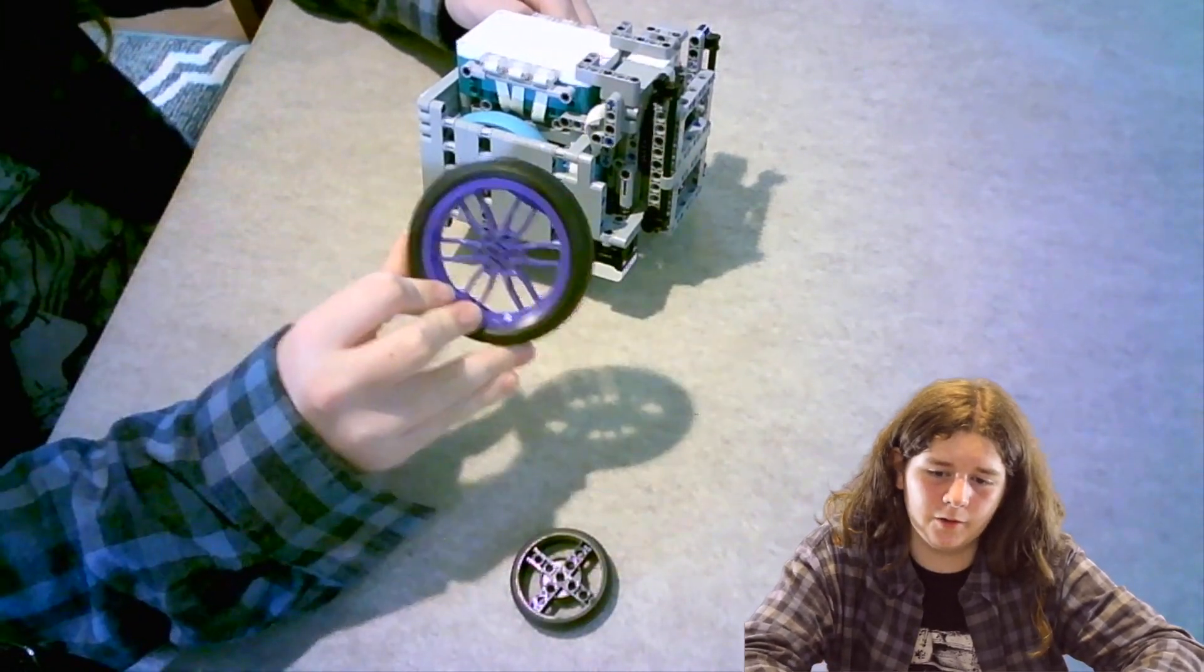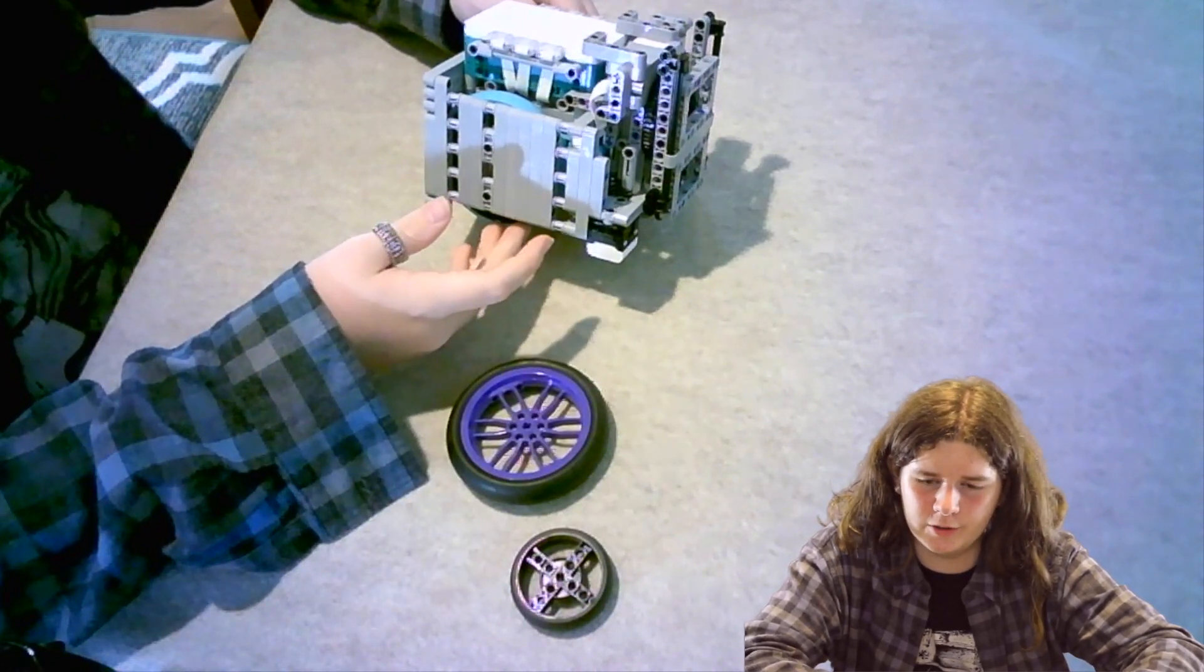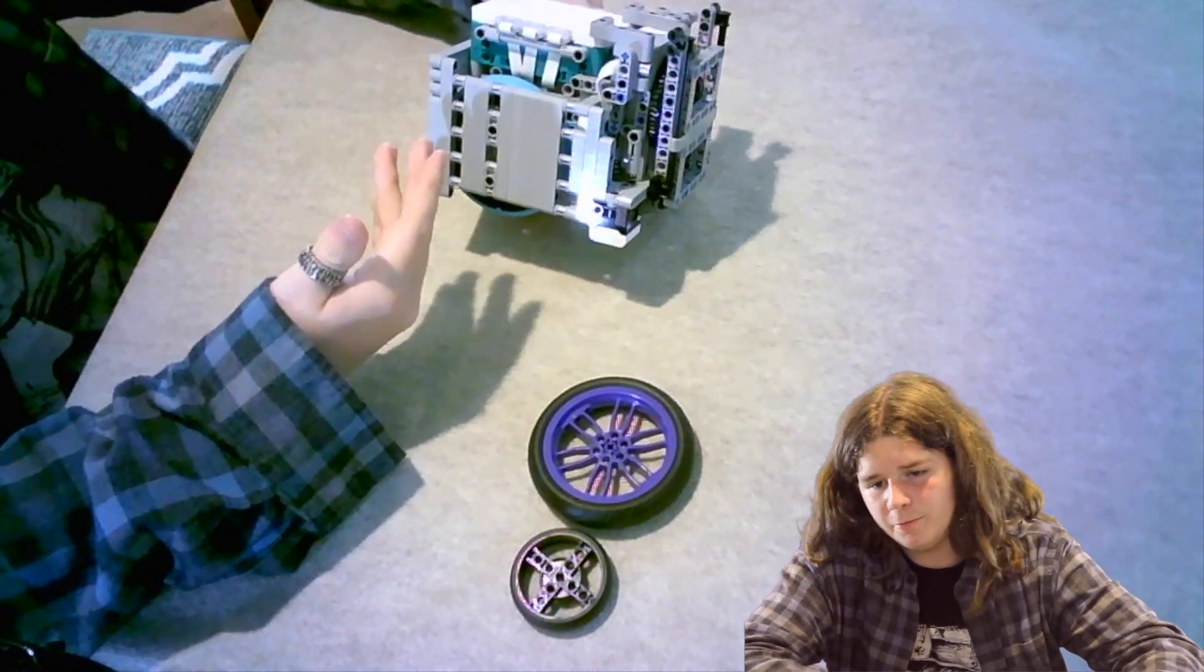Now granted this one is bigger but the difference is the rubber on this wheel is much more squishy than the rubber on this wheel. Because it's squishy it's less accurate when it's rolling across the mat which is why we wound up using this one in the end.